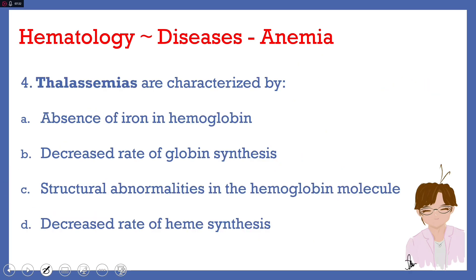Number four: thalassemias are characterized by — letter A, absence of iron in hemoglobin; letter B, decreased rate of globin synthesis; letter C, structural abnormalities in the hemoglobin molecule; or letter D, decreased rate of heme synthesis. The answer here is letter B, decreased rate of globin synthesis.